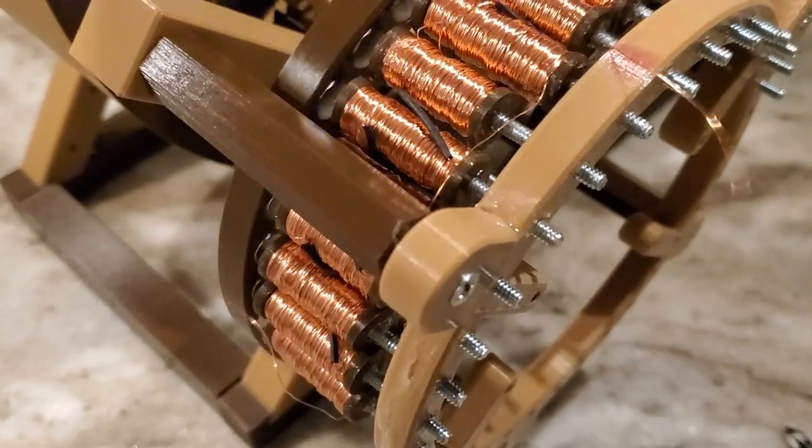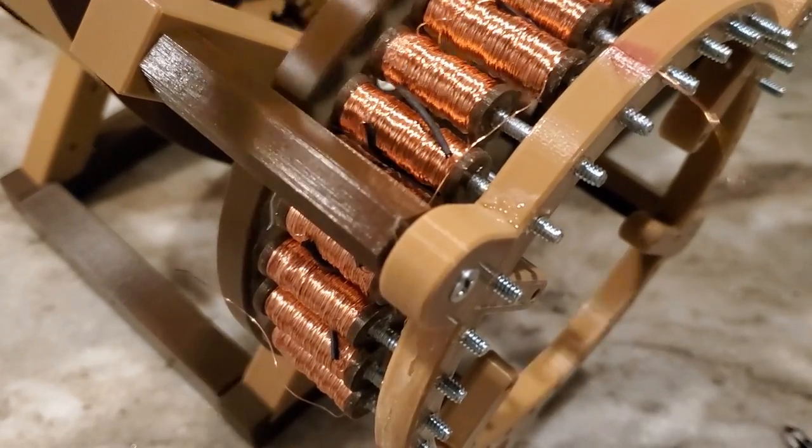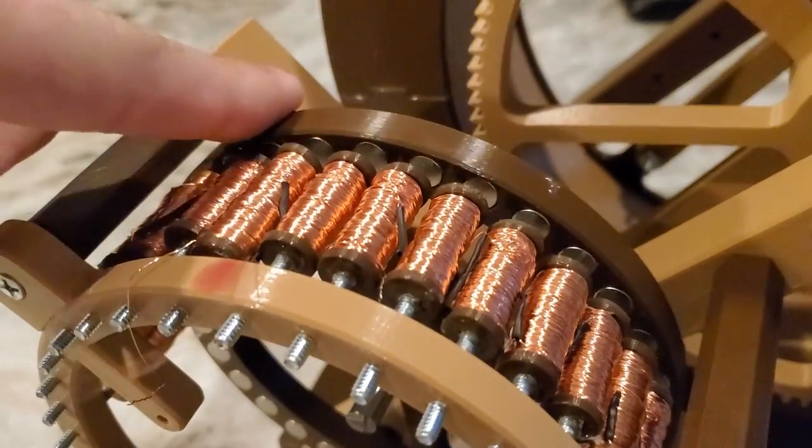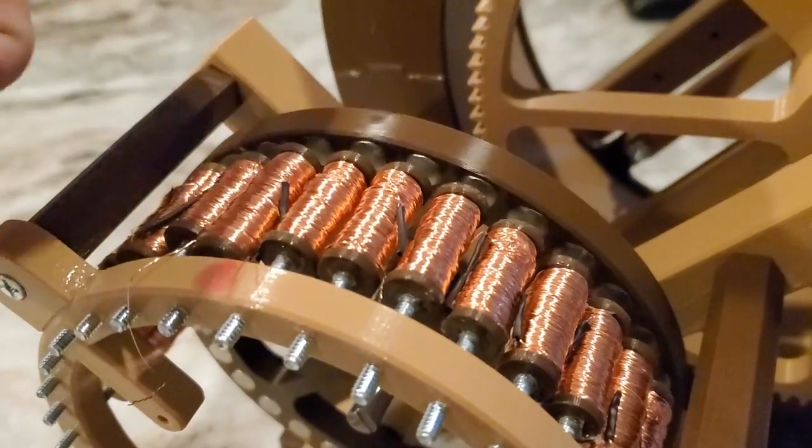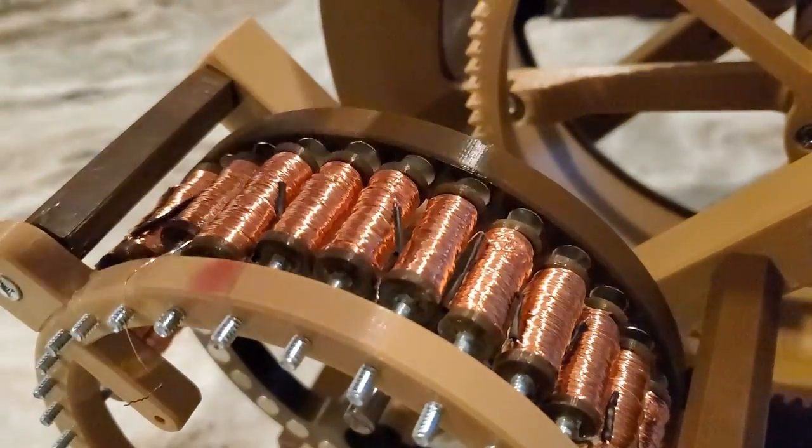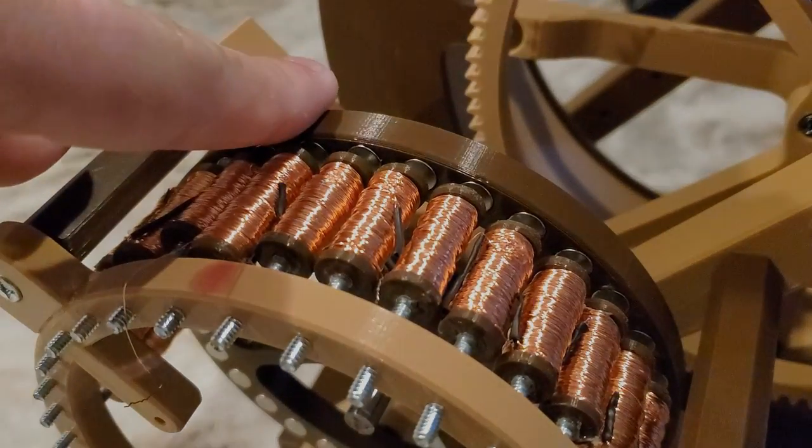Now there's another problem. My rotor has a ton of friction from cogging, which is where the magnetic pull drags on the coil cores. It's way too much friction to spin the wheel with water. I'll have to remove the ferromagnetic cores from the coils. This will reduce the power I can collect, but at least it will allow me to spin freely.